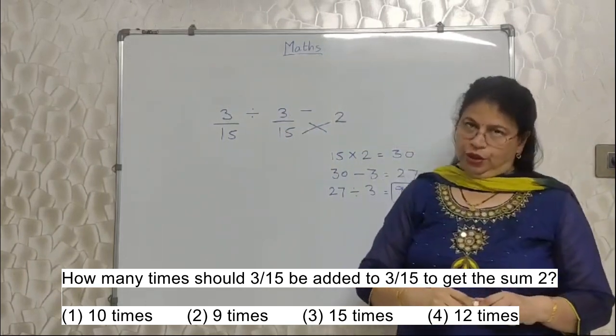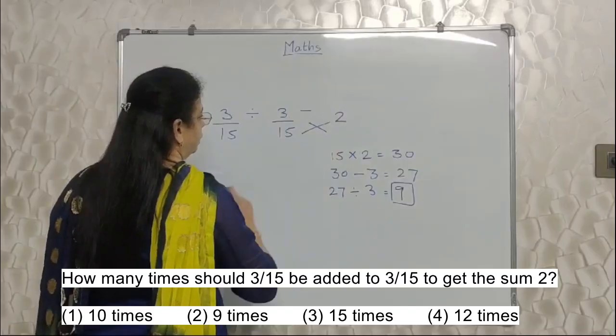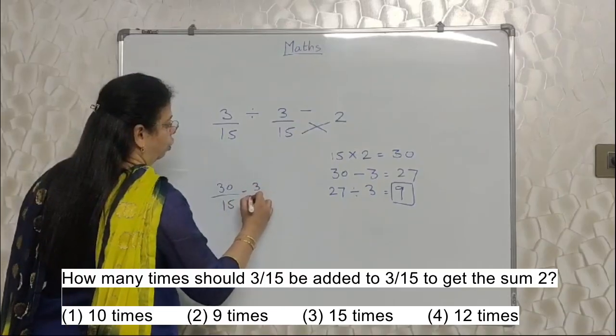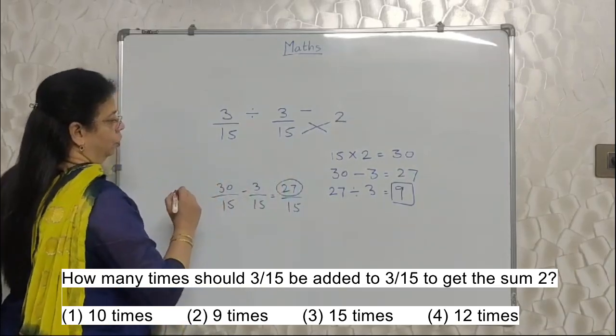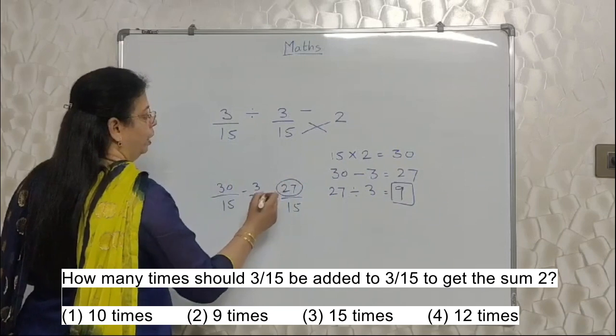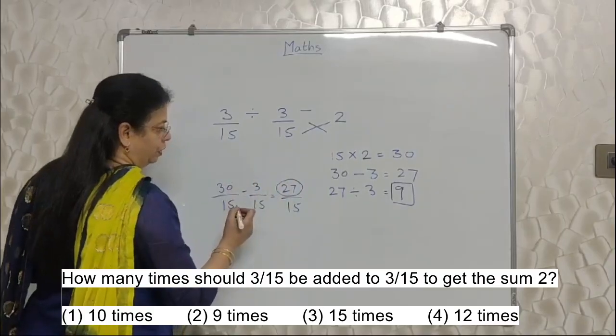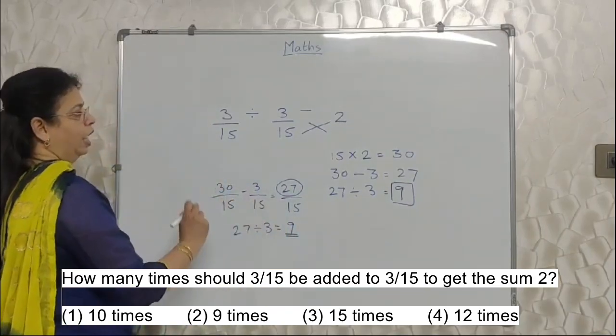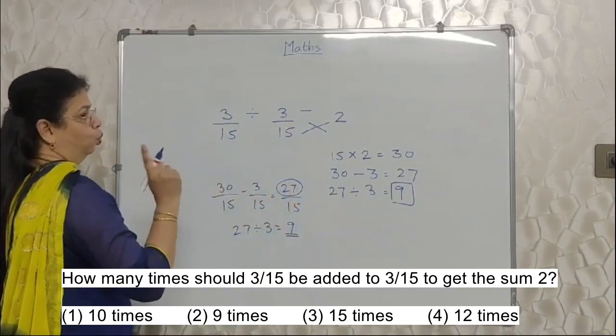This can be solved with the help of fraction. I know that. 3 upon 15, may kitni bar 3 upon 15 add karoge, so that the answer is 2? 2 means 30 upon 15. Out of that, 3 upon 15 is already there. So how much? 27 upon 15. So 27 ko 3 say divide karoge, so answer will be 9. Because 3 upon 15, 3 upon 15 kitni bar add karoge, that time you will get 27 upon 15. Obviously 9 times. So answer is 27 divided by 3, answer is 9. This way also it can be done, but I feel this is relatively easy for you to remember and do.